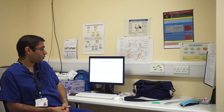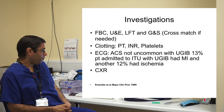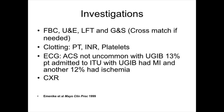Initial investigations should include full blood count, kidney function test, liver function test, and a group and save. Clotting should be checked for any underlying abnormality. ECG is absolutely vital because 13% of patients with massive upper GI bleed admitted to intensive care will also have an acute coronary syndrome, and another 12% will have a myocardial infarction. Chest X-ray is important to check for aspiration, perforation, or free air under the diaphragm.